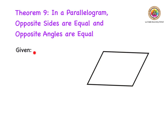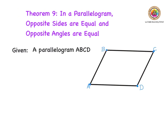The first thing we have to do is write down what we've been given. I've drawn a parallelogram, so we want to label it first, and then we can write down what we've been given. From labeling the parallelogram A, B, C and D, my statement is simply that I've been given a parallelogram ABCD.